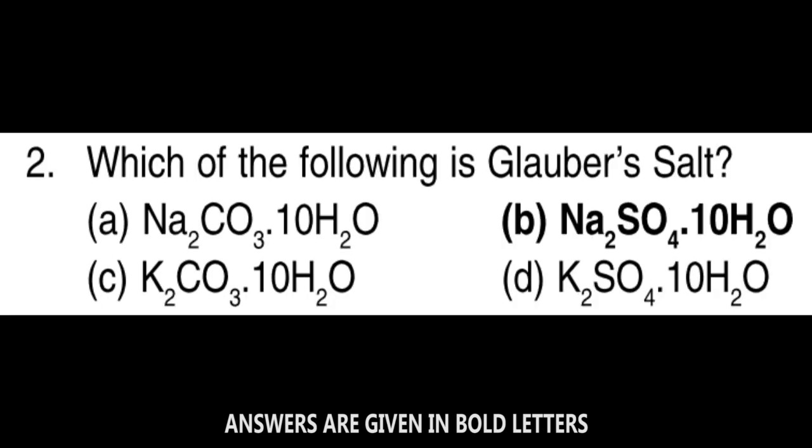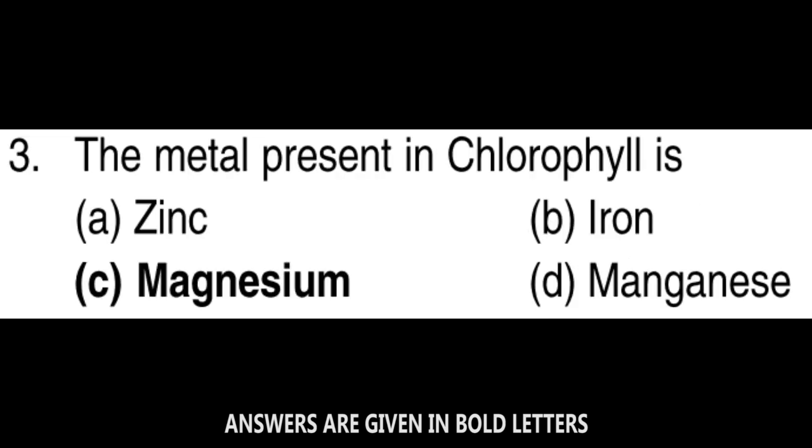Next question: Which of the following is Glauber's salt? Na2SO4·10H2O. Next question: The metal present in chlorophyll is magnesium.